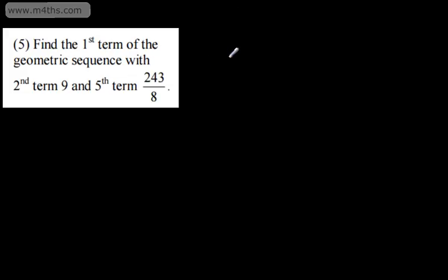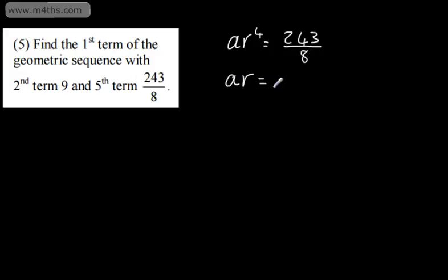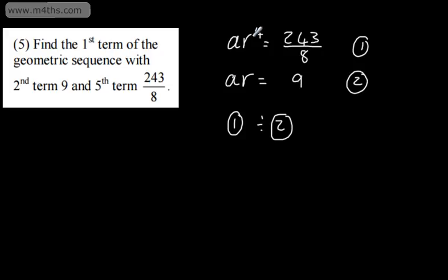In question 5, we're asked to find the first term of the geometric sequence with second term 9 and fifth term 243 over 8. All I'm going to do is write out an expression for the second and fifth terms. The fifth term will be AR to the power of 4, which equals 243 over 8. If I write out the second term, we know that that is AR, which equals 9. I'll call this equation 1 and this equation 2. We can use simultaneous equations and divide to eliminate A.